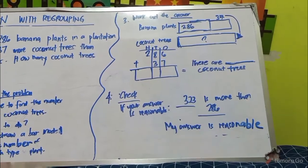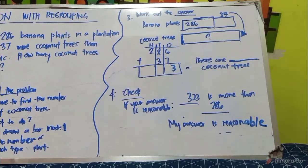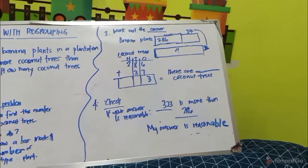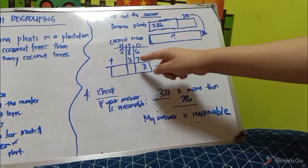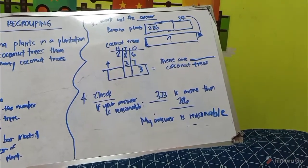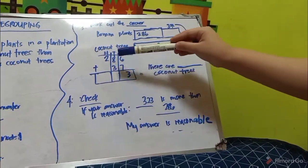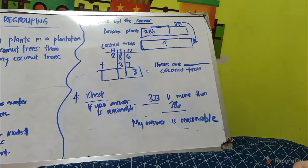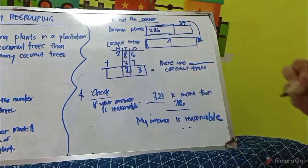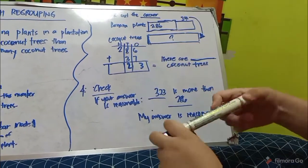6 plus 7 equals 13. I have to carry 1 because there is no space for 1 here — it's covering the tens. So 8 plus 1 is 9, and 9 plus 3 equals 12. Then 1 plus 2 is 3. Bring down the 3.